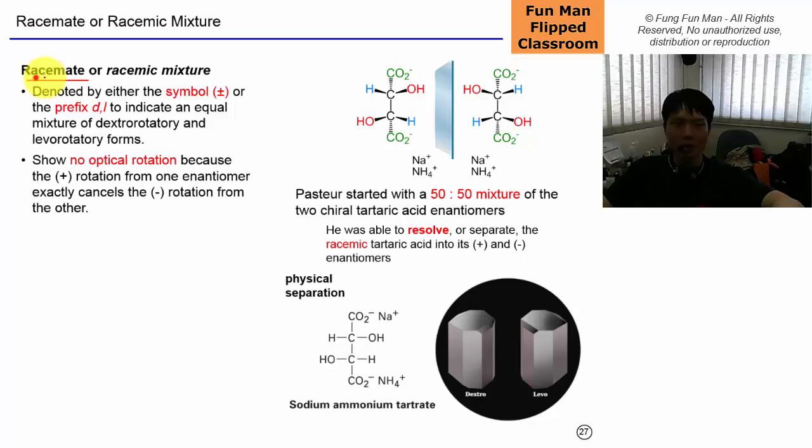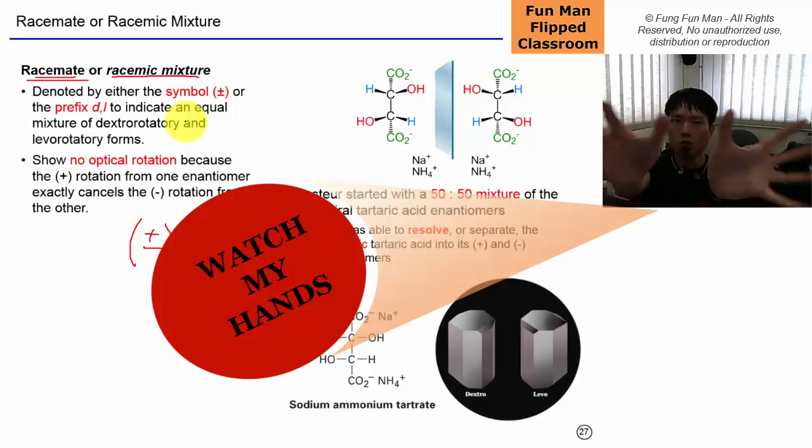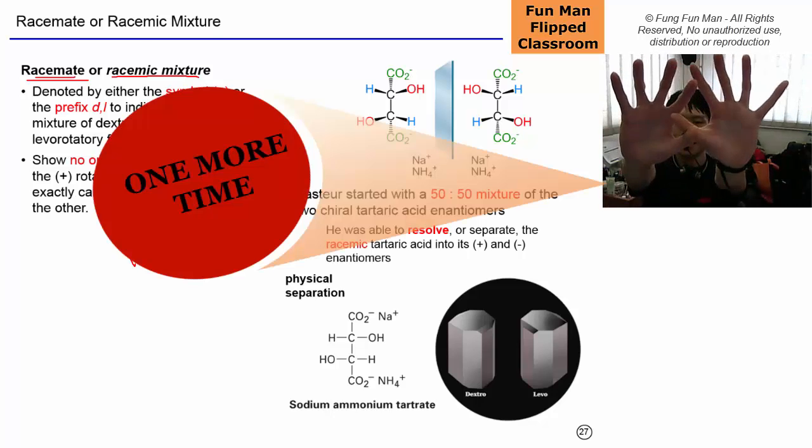Another term here, racemic or racemic mixture, we denote by using the opening parenthesis, put the plus and minus together, plus on top of the minus, close parenthesis, or we can use the prefix D and L to show an equal mixture of the dextrorotatory and the levorotatory forms. Now this kind of mixture shows no optical rotation because they have the equal amount of each, so it just rotates the same way and it cancels off.